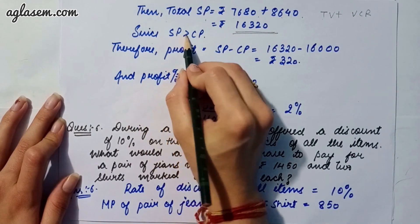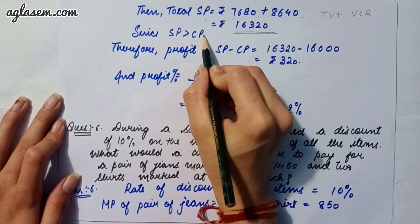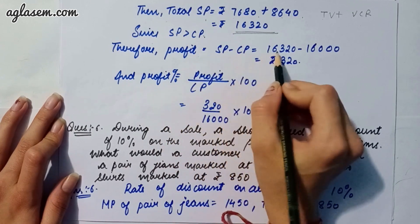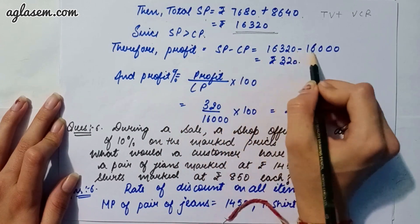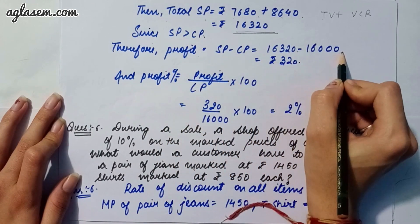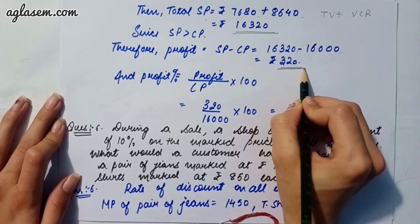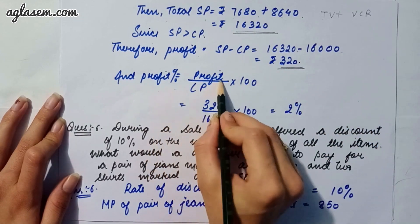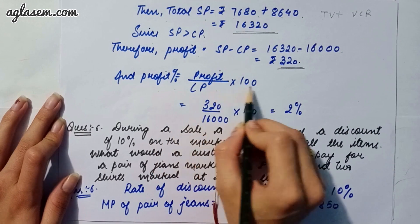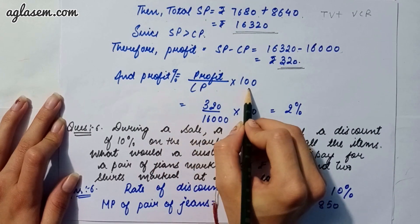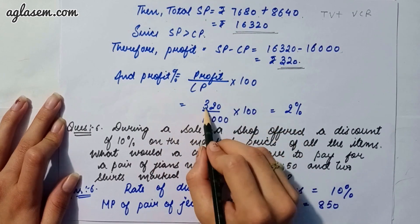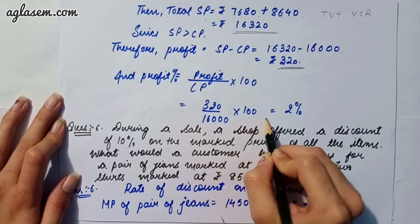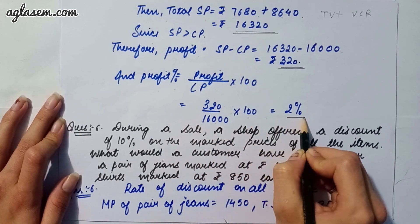Since selling price is greater than cost price, there is a profit. Profit is 16320 minus 16000, which is rupees 320. Profit percentage is profit upon CP into 100, that is 320 divided by 16000 into 100, giving 2 percent.